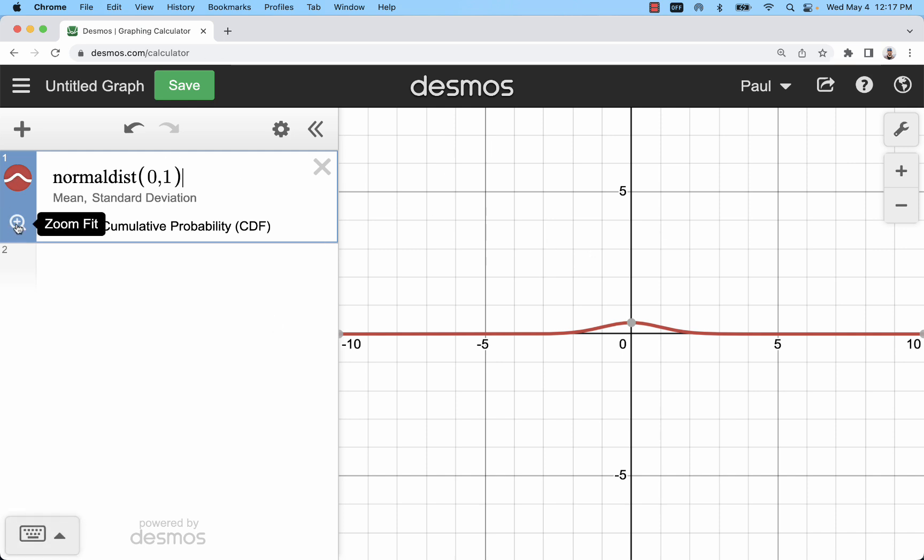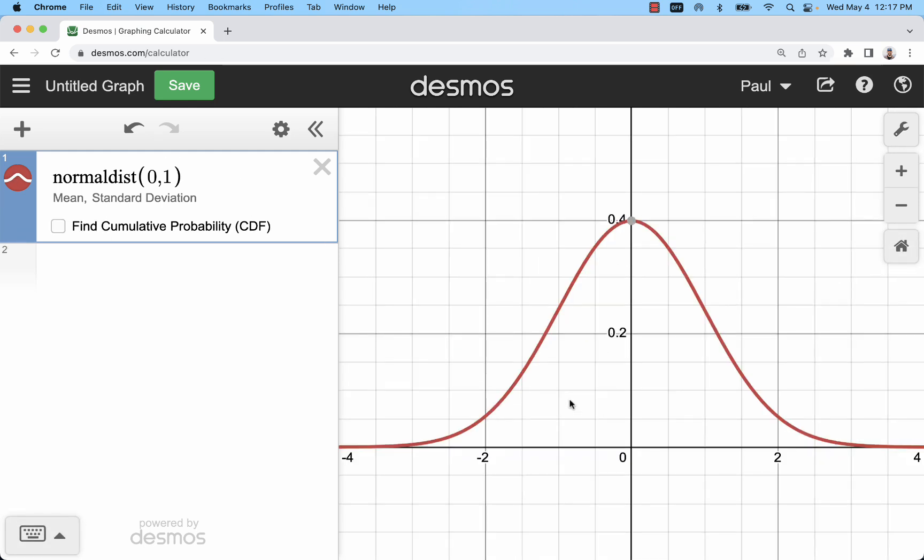Once you create it I recommend clicking zoom fit. Then you can see the distribution. You can see it out to four standard deviations on either side.